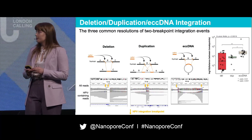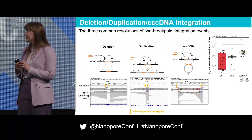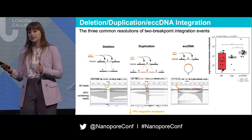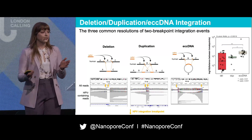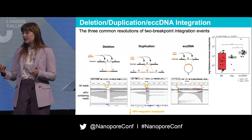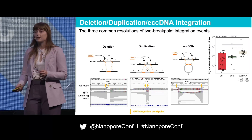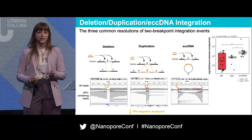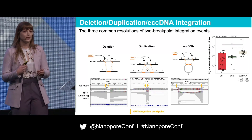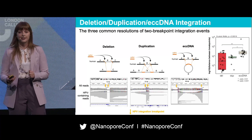When comparing the distances between HPV breakpoints, ECC DNA had a significantly greater distance between breakpoints compared to deletions and duplications. It also had a consistent size of around 70kb, suggesting that ECC DNAs may need to be of a certain size in order to be stable within the cell.